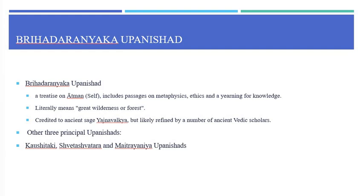There are three other Upanishads classified as principal Upanishads. The Kaushitaki Upanishad, also known as the Kaushitaki Brahmana Upanishad, is part of the Kaushitaki Aranyaka or the Shankayana Aranyaka of the Rigveda. The Kaushitaki Aranyaka comprises 15 chapters, and four of these chapters form the Kaushitaki Upanishad.